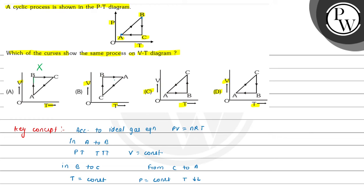B to C: temperature is constant, and in this process temperature is also constant — this matches. Here in C to A, pressure is constant and temperature is decreasing, so volume is also decreasing. But in another option, temperature is increasing, so that is incorrect. Here temperature is decreasing and volume is also decreasing — this is the correct behavior.